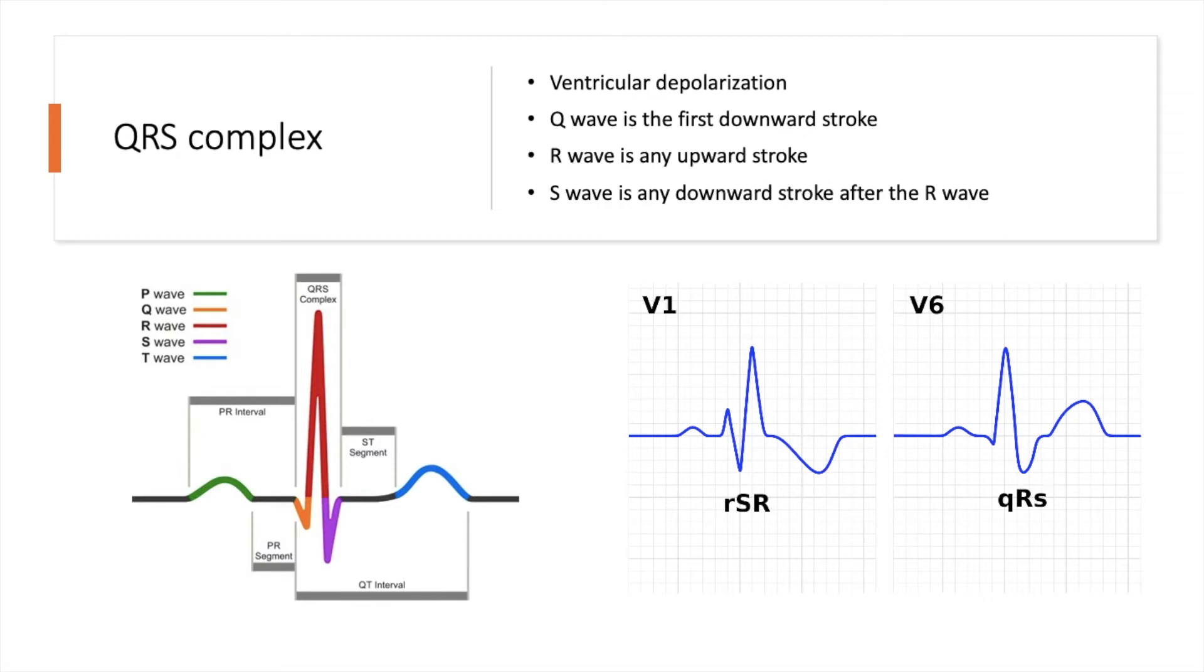Sometimes you might be asked to name a QRS complex or identify the pattern that's associated with it. If we just go back to our main principles, you can see that the first upward stroke is an R. So this is going to be an R wave. The S wave is any downward stroke after the R wave. So this is going to be the S wave part. And then remember that R wave is any upward stroke, so finishing off with an R pattern. So this is actually called an RSR pattern, rather than the normal QRS complex. And because the Q wave is the first downward stroke, but you don't actually have any downward strokes that happen initially, there is actually no Q component to this. This is characteristic of a particular ECG pattern, but I won't talk about that too much now.